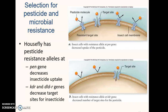Houseflies have pesticide-resistant alleles at a couple of different locations. The pen gene decreases insecticide uptake into the cell, so it just doesn't even enter the cell and therefore doesn't have a negative effect on the organism. The KDR and DLDR genes decrease the target sites for the insecticides completely, thus decreasing the binding ability of the pesticide.